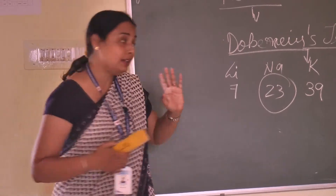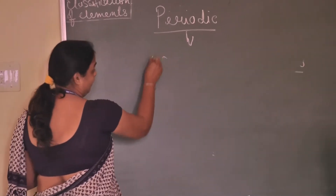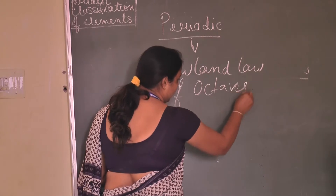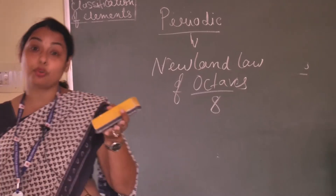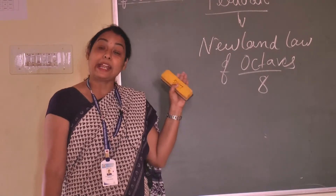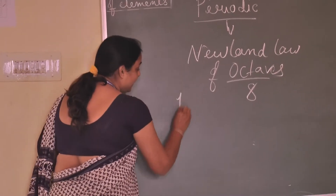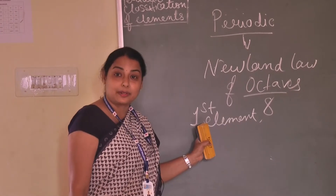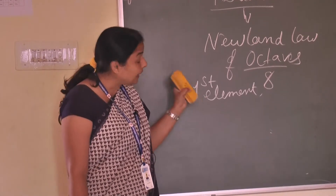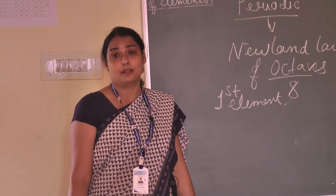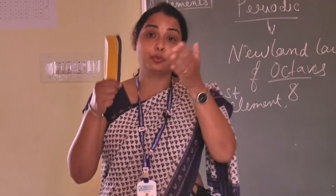After Dobereiner, Newland came. Now, what was Newland's Law of Octaves? This word 'octave' means 8. In this law, what Newland wanted to prove was that, arranging elements by atomic mass, he considered that the 8th element is similar to the first element. He stated that the 8th element will be similar to the first element — that was Newland's Law of Octaves. But somehow he was not able to apply it to every element, so Newland also failed and could not complete the periodic table.